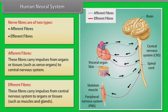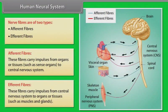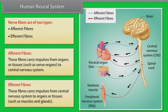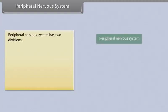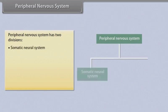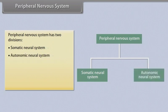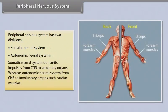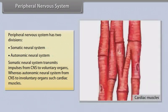Efferent fibers carry impulses from the central nervous system to organs or tissues such as muscles and glands. The peripheral nervous system has two divisions: somatic neural system and autonomic neural system. Somatic neural system transmits impulses from CNS to voluntary organs, whereas autonomic neural system transmits from CNS to involuntary organs such as cardiac muscles.